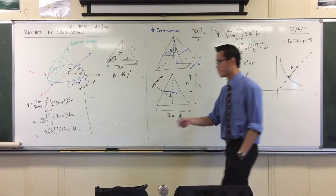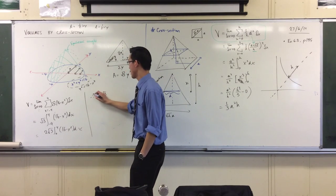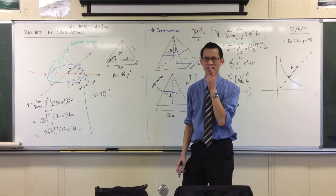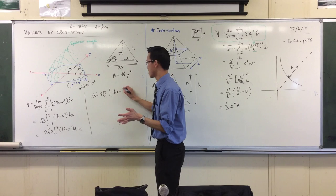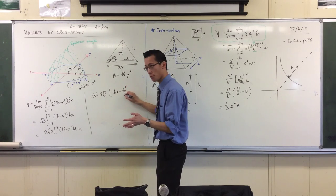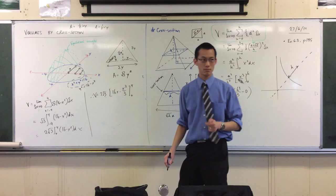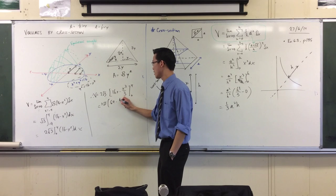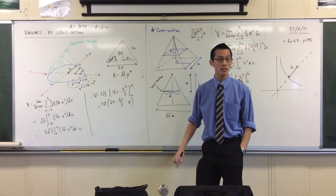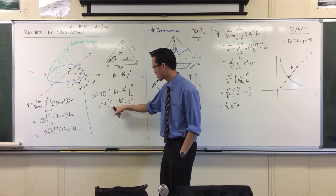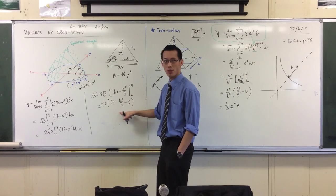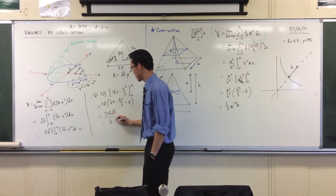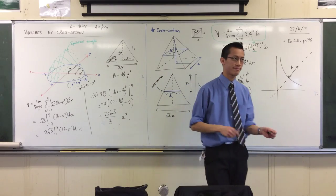Let's integrate. I've got 2 root 3 at the front. What's my integrand? Sorry, not integrand, my primitive. 16x minus x cubed on 3 from 0 to 4. 0 to 4? 2 root 3, that looks to me like 64 minus 64 on 3 minus 0, lower bound. And I think this works out to 128 on 3. Which gives you this. Okay.